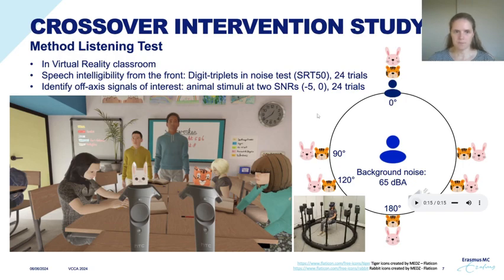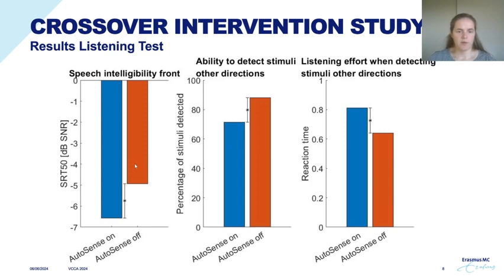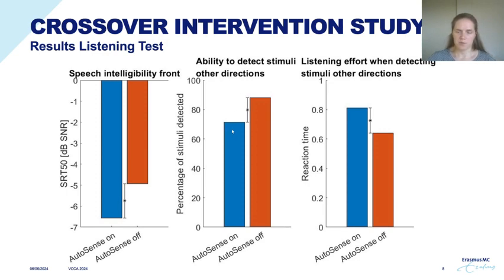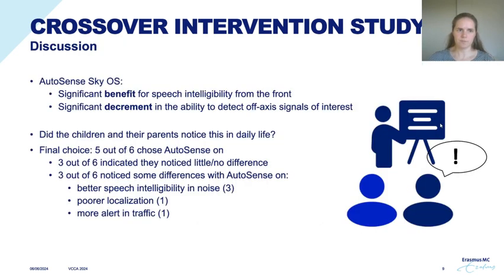The visual environment was presented via a virtual reality headset and the acoustic environment over a 12-loudspeaker ring. In the results, even with only six participants, we see a significant effect of AutoSense on the SRT50 score — it was significantly better when AutoSense was on. We also see a significant decrement in performance detecting the animal stimuli when AutoSense was switched on, and children took significantly longer to detect those stimuli. So AutoSense Sky has a significant benefit for speech intelligibility from the front, but also a significant decrement in the ability to detect peripheral signals of interest, which is what we expected in a classroom situation.